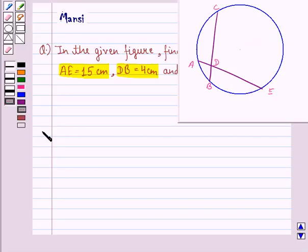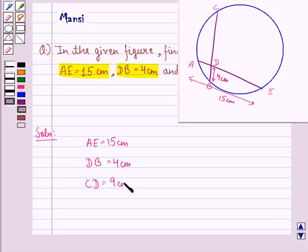So let us see the solution to this question. We have AE 15 cm, DB 4 cm, this is 15 cm, this is 4 cm, CD is 9 cm, and DE is something that we have to determine.